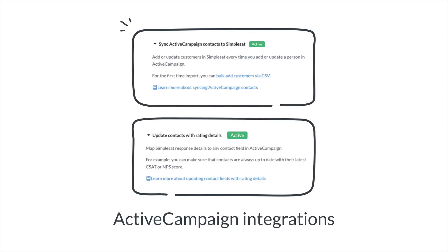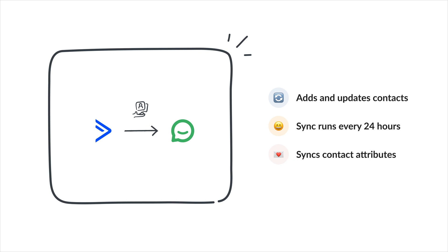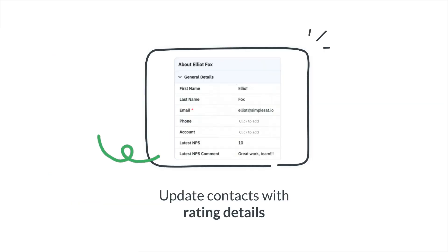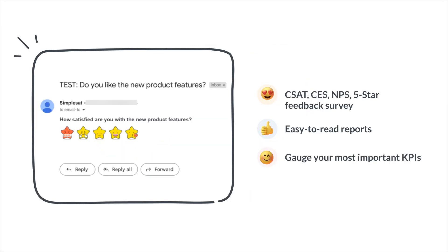Now let's look at how SimpleSat integrates with ActiveCampaign. The contact sync integration makes sure all customers in SimpleSat are in sync with your list in ActiveCampaign. Map SimpleSat response details to any contact field, allowing for seamless integration and better customer data organization. Similar to ongoing email surveys, after embedding and setting up integrations, everything will seamlessly operate in the background without requiring any additional effort from your end.